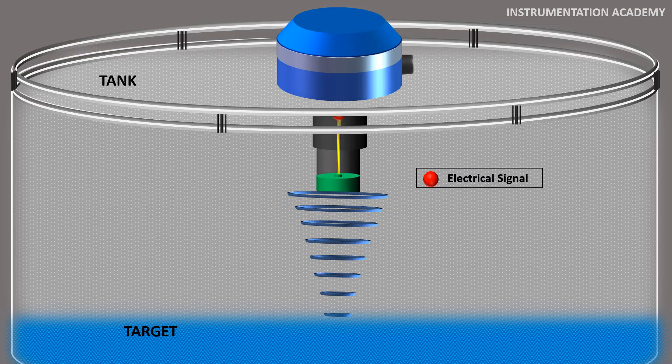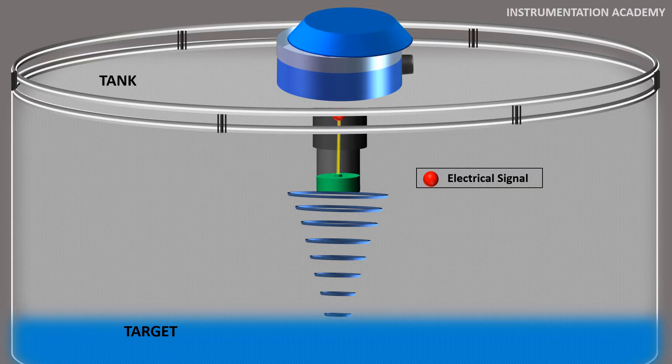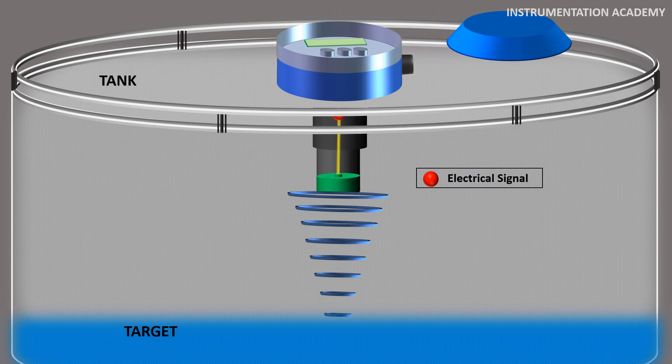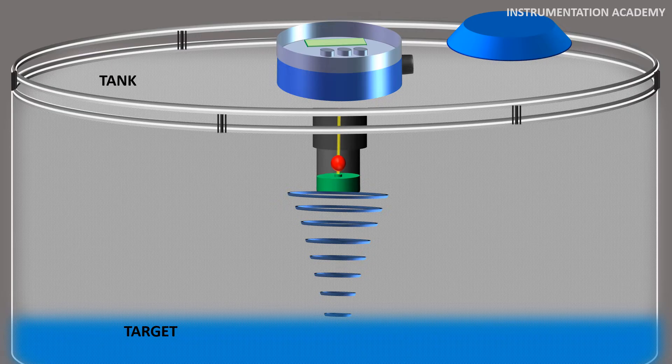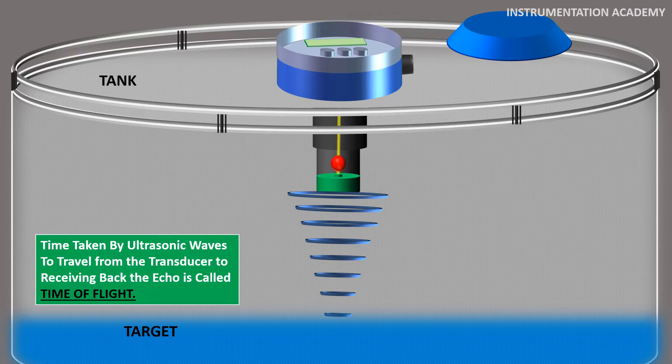An electronic signal processor analyzes the returned echo and makes sure that these echoes are from the target and not from walls, beams, pipes or any other obstacles. Now it calculates the time taken by the ultrasonic waves from leaving the transducer to receiving back the echo. This time is known as time of flight.